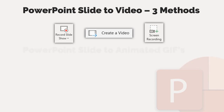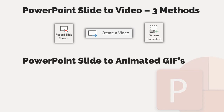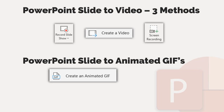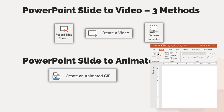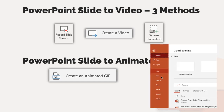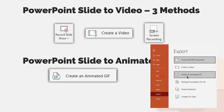We will also see how to convert PowerPoint presentations into animated GIF, and this option can be found under the Export section of the main File menu. Let's check out each of these options one by one.